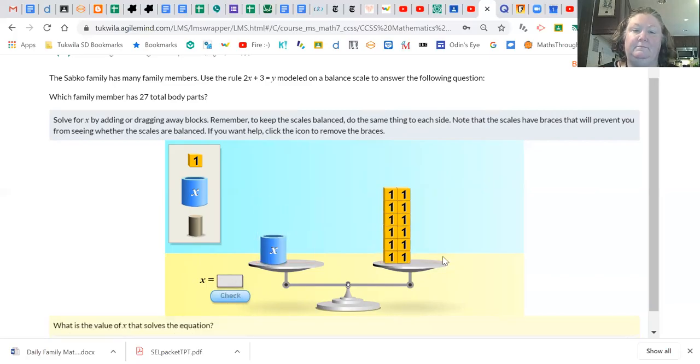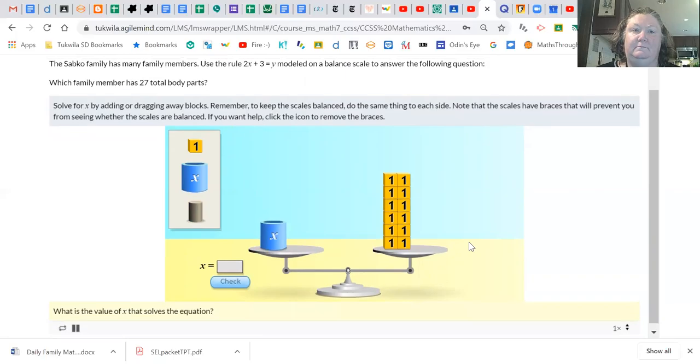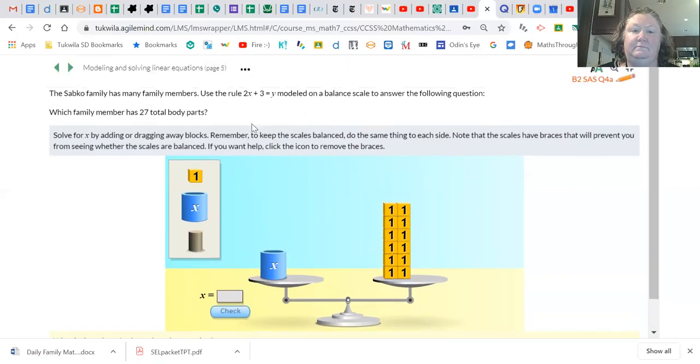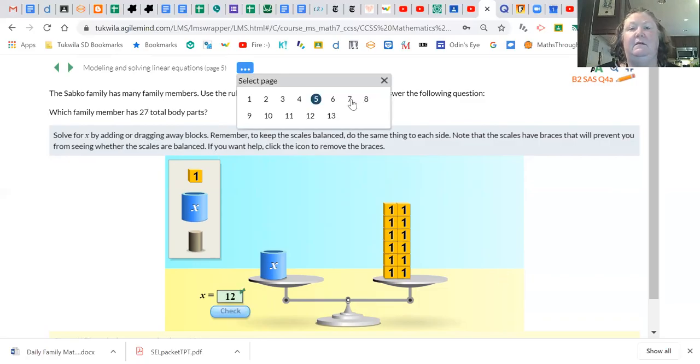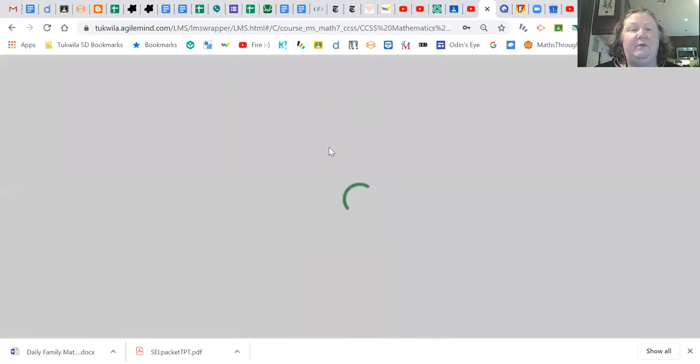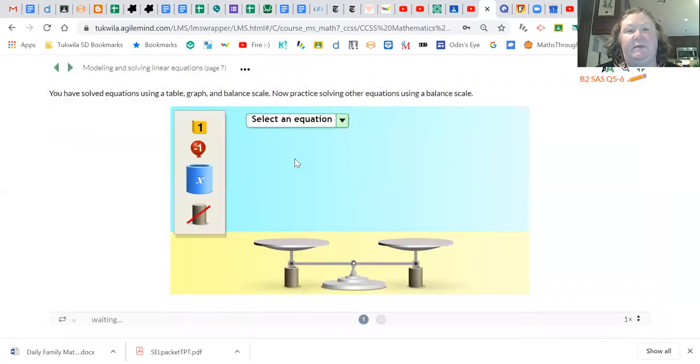And then how many groups do we want to divide into? Two, because we have two cups or two x's. Okay, and what are we saying our x is equal to? Two, four, six, eight, ten, twelve. You can check, and it says we're right.